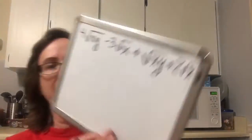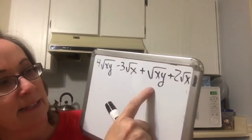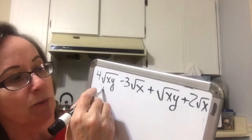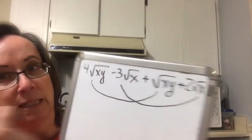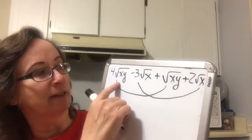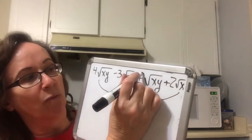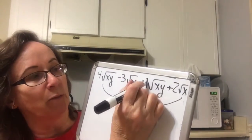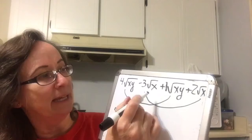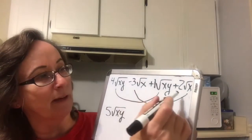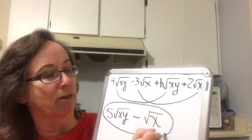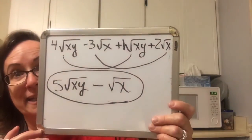Now looking at this one — this is already simplified, this is simplified, this is simplified, and this is simplified. So I'm going to join these two together and these two together because they are already simplified radicals. If I take the 4 square root of xy and the understood 1 square root of xy, I end up with 5 square root of xy. Then the negative 3 square root of x and the positive 2 square root of x gives a negative 1 square root of x. That's all I can do.